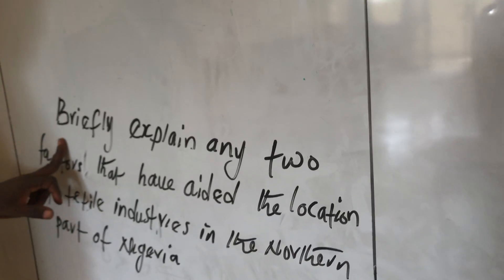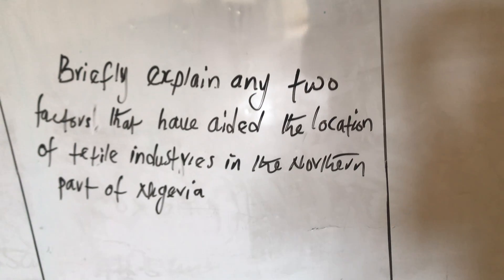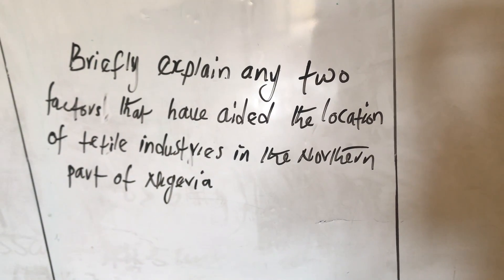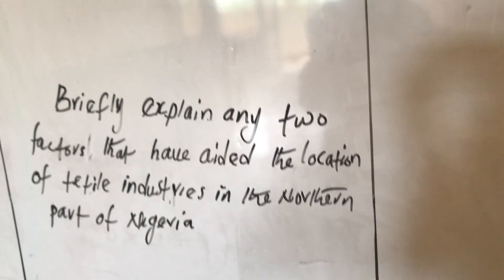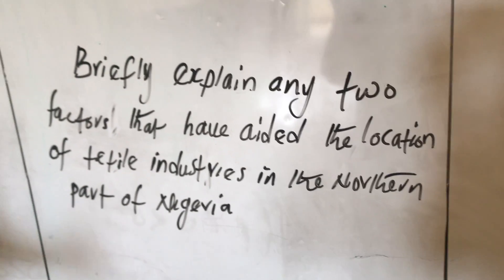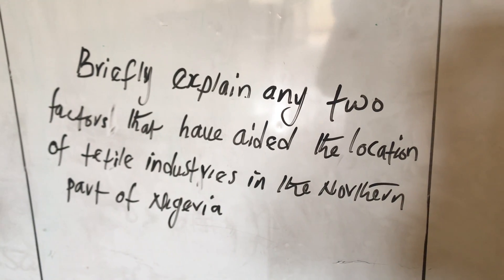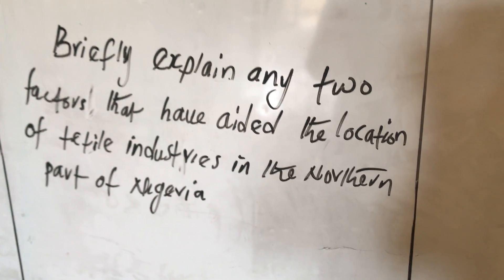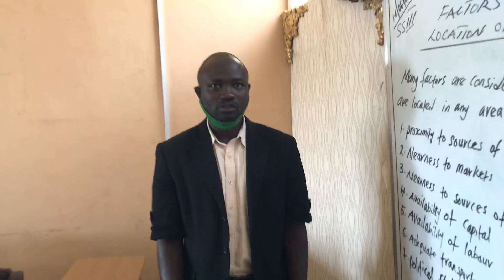With this understanding, I have an assignment question: Briefly explain any two factors that have aided the location of textile industries in the northern part of Nigeria. Explain according to your understanding how these factors have attracted the location of textile industries in the northern part of the country. Have a wonderful day.